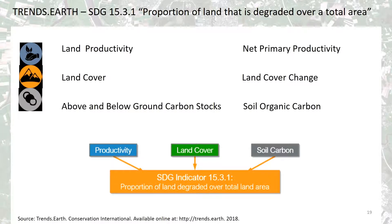Deriving the indicator for the baseline and subsequent monitoring years is done by summing all areas where any changes in the subindicators are considered negative, or stable when degraded in the baseline or previous monitoring year. This involves the assessment and evaluation of net primary productivity, land cover change, or soil organic carbon. Trend Earth allows users to compute each of these subindicators in a spatially explicit way, generating raster maps which are then integrated into a final SDG 15.3.1 indicator map, and produces a table of results reporting areas potentially improving and degraded for the area of analysis.